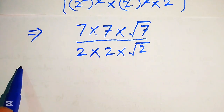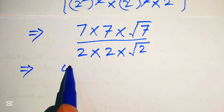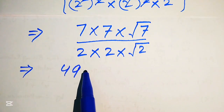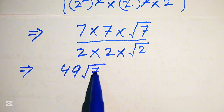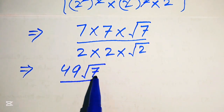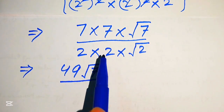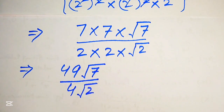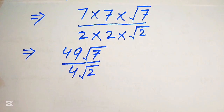Multiplying in the numerator: 7 × 7 = 49, giving us 49 times the square root of 7. In the denominator: 2 × 2 = 4, giving us 4 times the square root of 2.